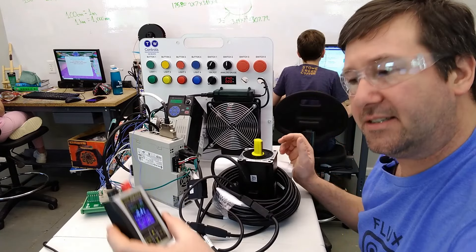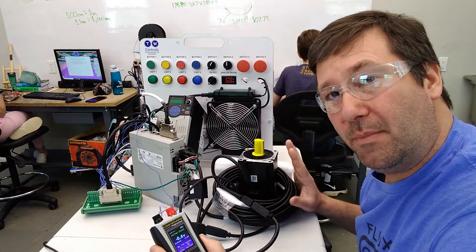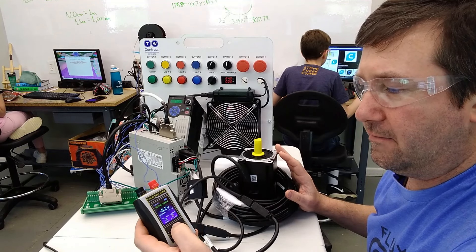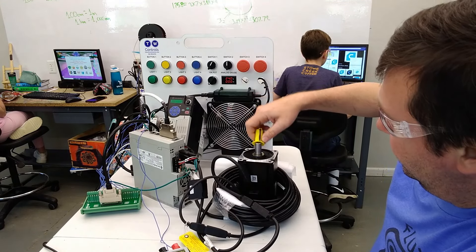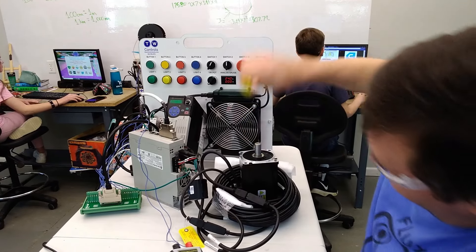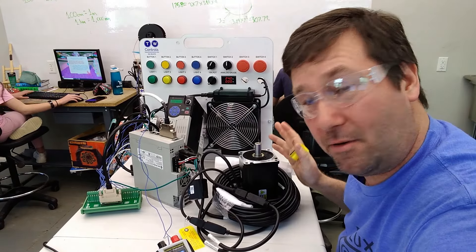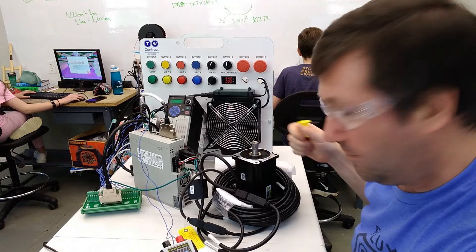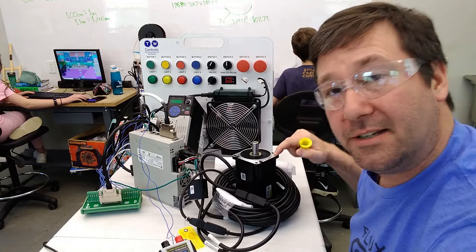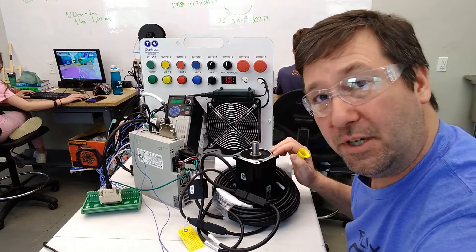One other thing: this is in speed control mode. If I take it to 0.1 volts and try my best to clamp this down, you see the motor twists. I'm not going to do anything crazy on YouTube, but you cannot stop this motor unless you have enough power to overcome what it can put out.